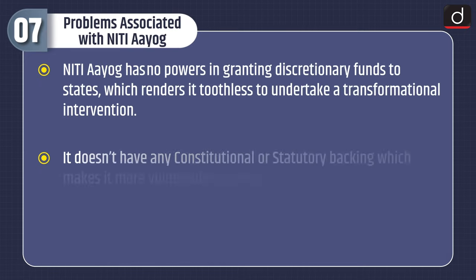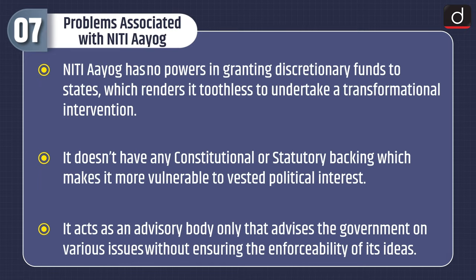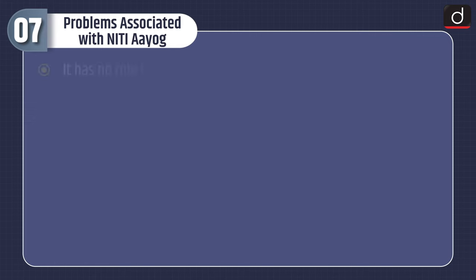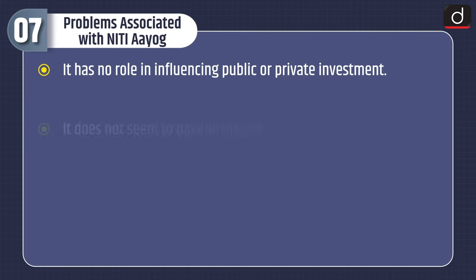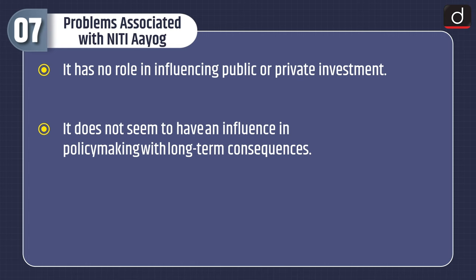Problems associated with NITI Aayog: NITI Aayog has no powers in granting discretionary funds to states, which renders it toothless to undertake transformational intervention. It doesn't have any constitutional or statutory backing, which makes it more vulnerable to vested political interests. It acts as an advisory body only, advising the government on various issues without ensuring the enforceability of its ideas. It has no role in influencing public or private investment and does not seem to have influence in policy making with long-term consequences.